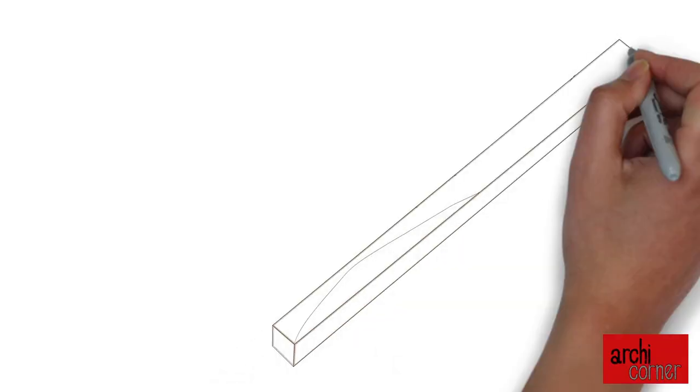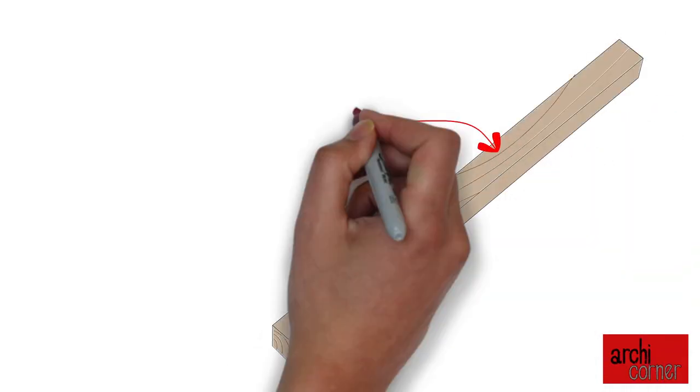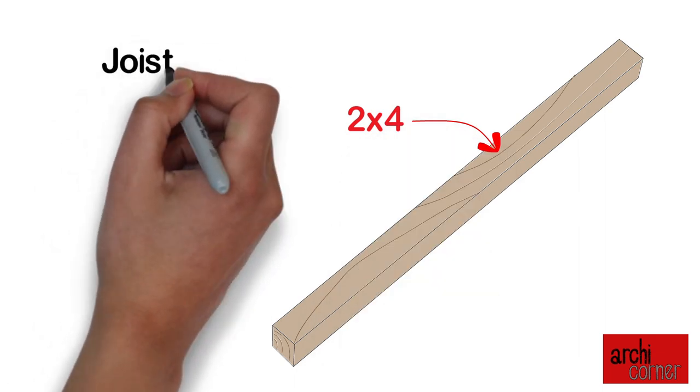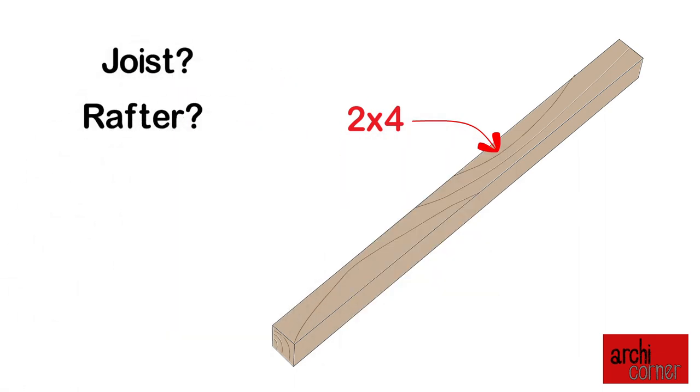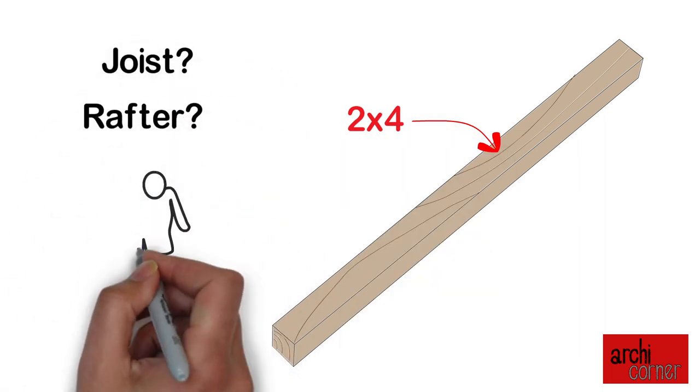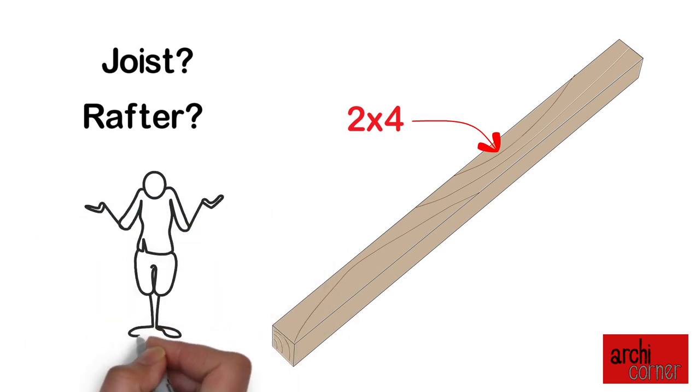So why should it be any different with structural components? You shouldn't be thinking about sizes — you should be thinking about what that member does, what its purpose is in that structure. Let's take a look at a quick example. By looking at this 2x4, would you say it's a joist? Is it a rafter? Well, the truth is you can't tell — this 2x4 can serve many purposes.